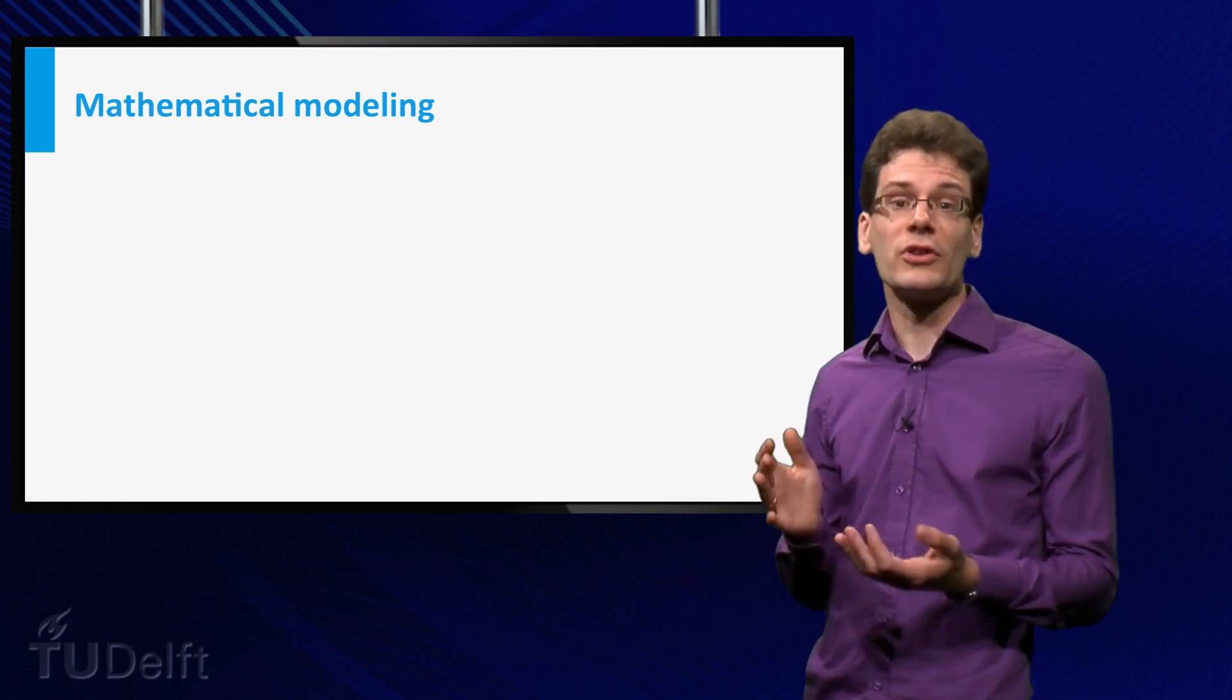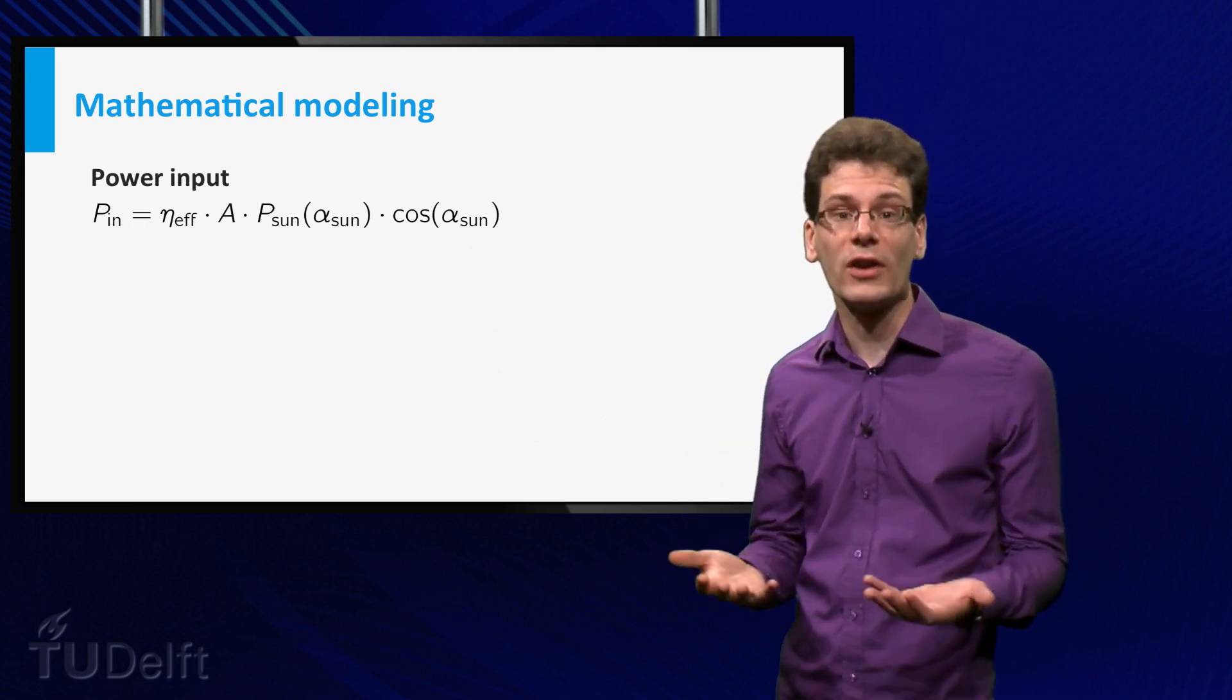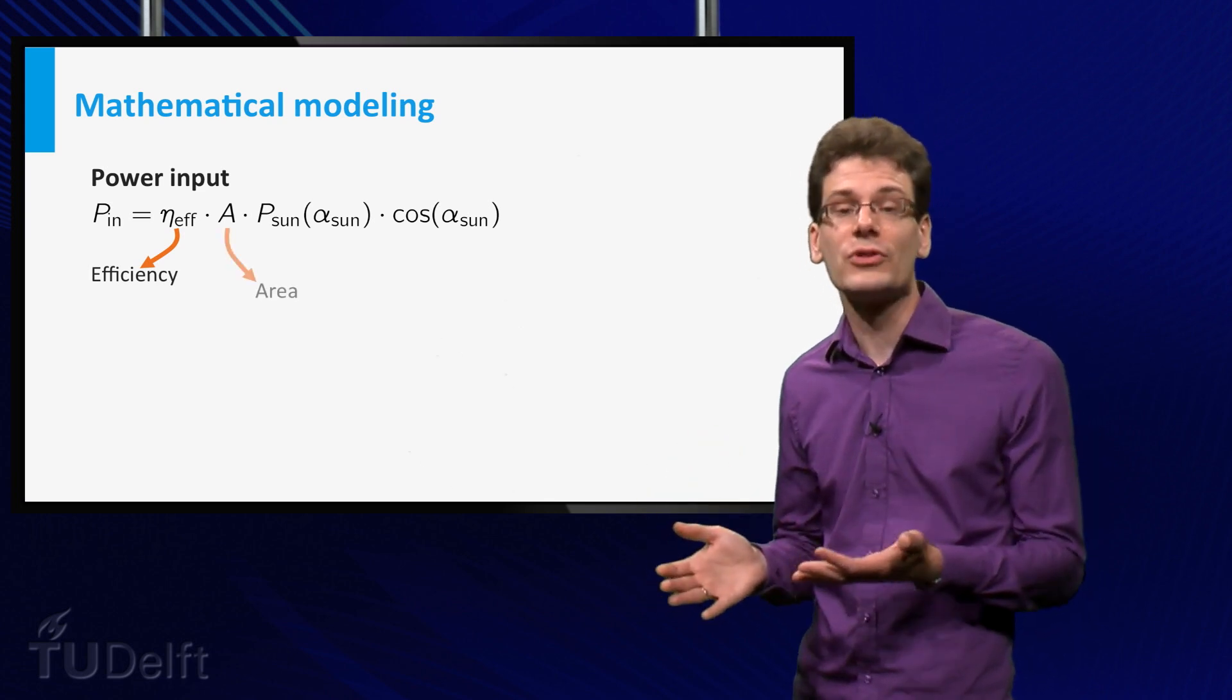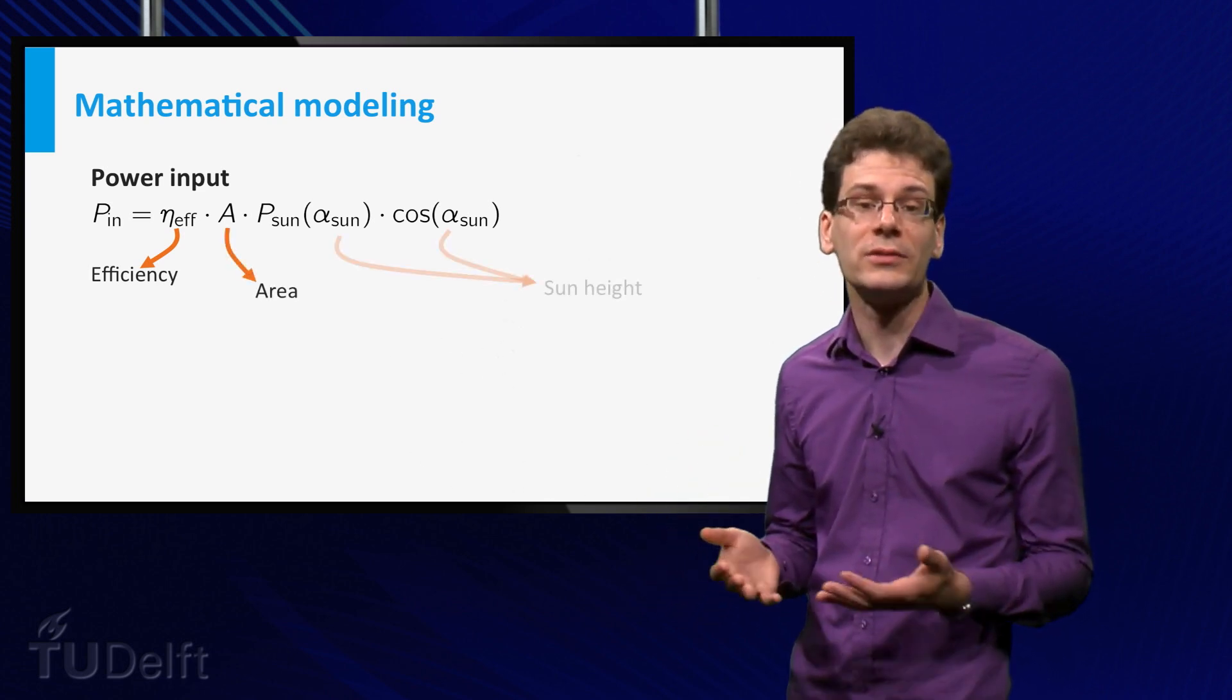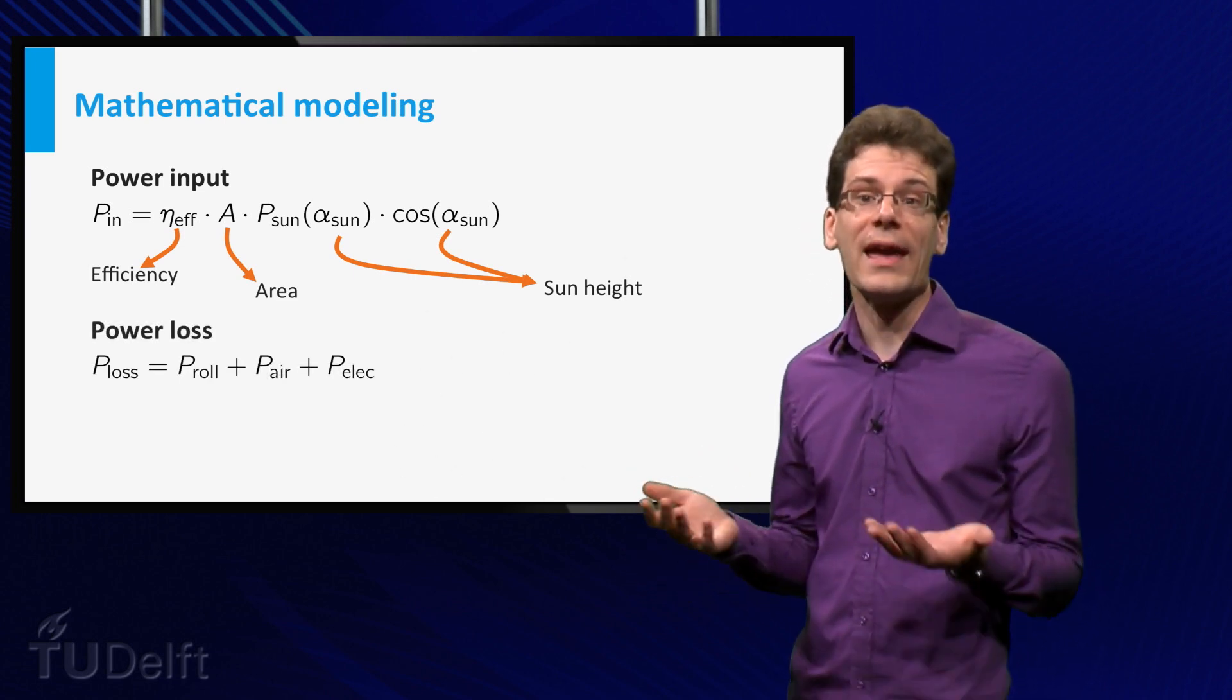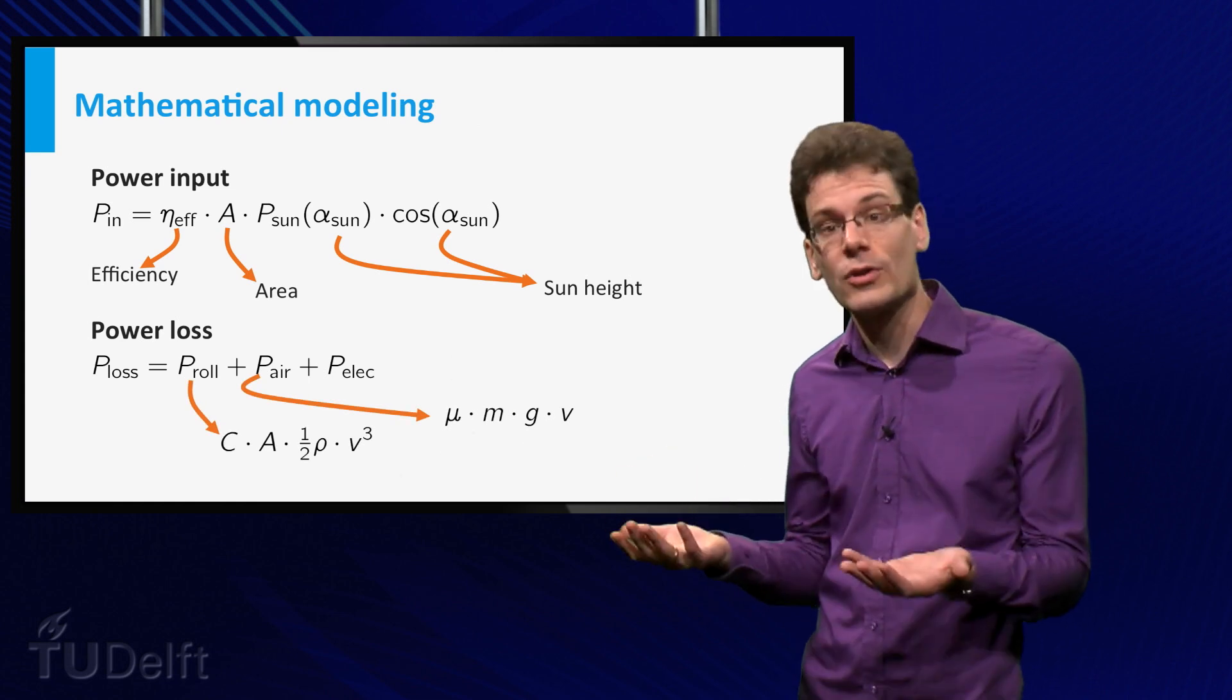Just a small example of such relations: the power input of the Nuance Car is described by a function relating the efficiency of the solar cells, the area of the solar cells, the height of the sun, and other quantities. Power loss depends on roll and air friction, which both depend on speed and other parameters, and loss of electrical power.